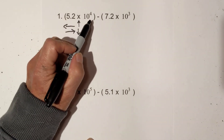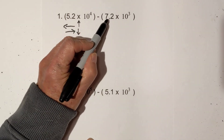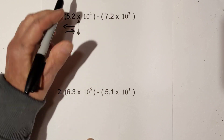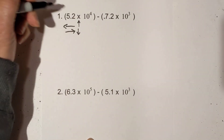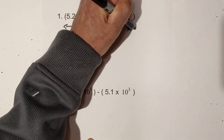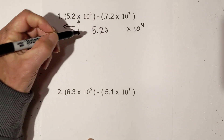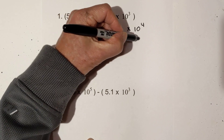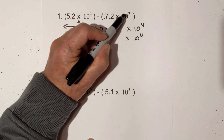I have 5.2 times 10 to the 4th and 7.2 times 10 to the 3rd. I'm going to raise the 3rd to the 4th, so I'll need to move the decimal one place to the left. I end up having 5.2 times 10 to the 4th and 0.72 times 10 to the 4th, because I moved the decimal one place to the left.